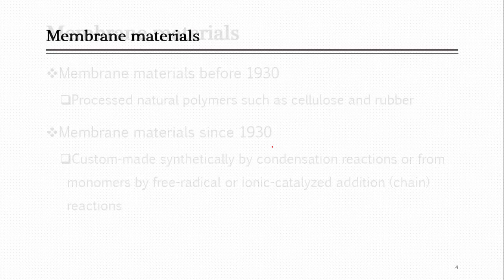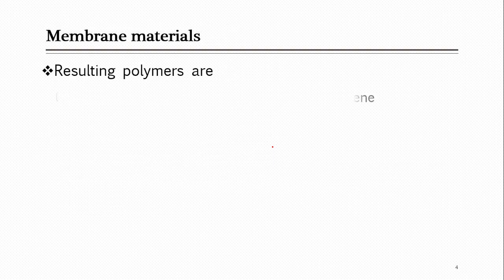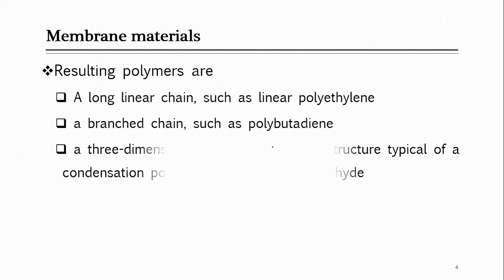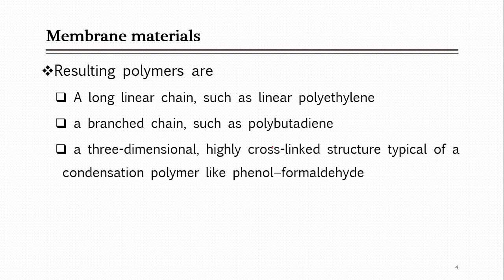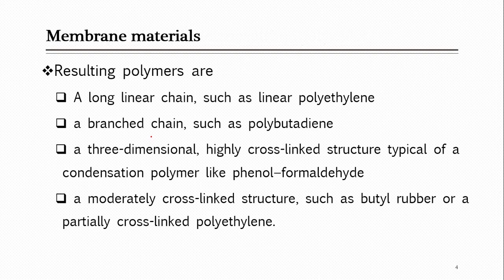Before 1930, the materials used for membranes were natural polymers. After 1930, due to synthesis of various materials in industry, they are being used for synthesizing various membranes. Most of the time polymers are used for membrane synthesis — naturally, polymers like cellulose and rubber were used, and later with the development of industries, synthetic polymers were used. There are different types: some are linear branched, and some are cross-linked polymers.